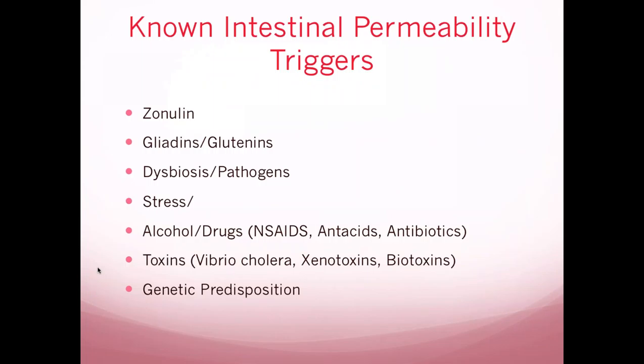If gluten proteins persist and don't get broken down by healthy bacteria in a healthy lumen, they trigger what's called intestinal barrier opening, leading to a more problematic situation. Celiacs know this all too well — it triggers zonulin, which opens up the junctions, lets too much into the bloodstream, and causes an inflammation response. Other triggers include zonulin, gliadin, glutens, dysbiosis, pathogens, stress, alcohol, drugs, antacids, and antibiotics. Some people also have a genetic predisposition, such as familial celiac.